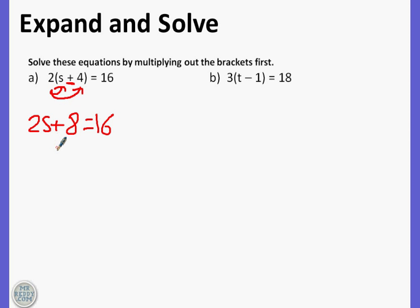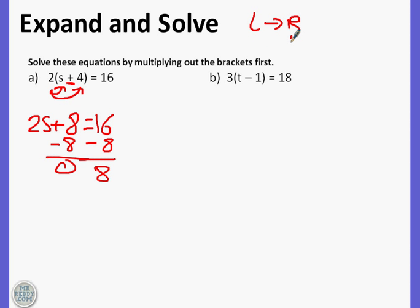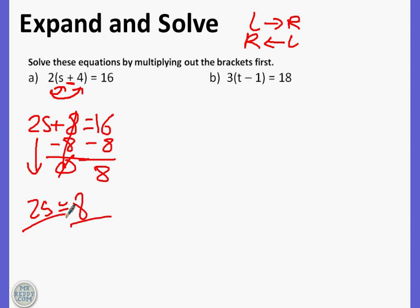We've done this before - we take away eight. Whatever we do to the left we do to the right. We take the two s down, so two s equals eight. Then we divide each thing by two because two is smaller than eight, and that equals s equals four.